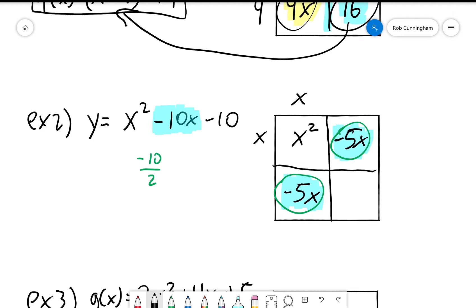Okay, again, a little bit of division with this side is negative 5 because negative 5 times x is negative 5x. This side also needs to be negative 5. Now all we have to do is fill in our lower right region. Well, negative 5 times negative 5 is positive 25.